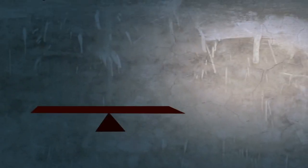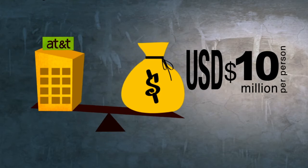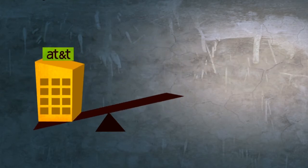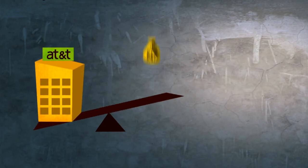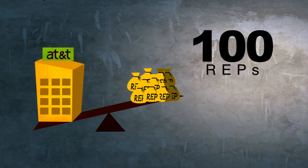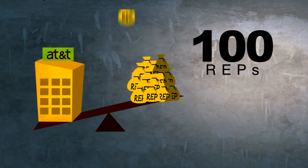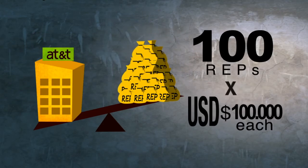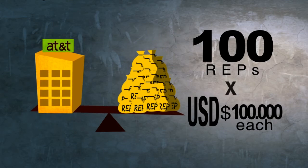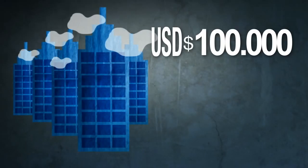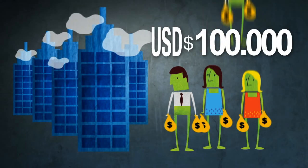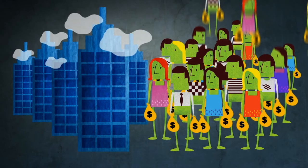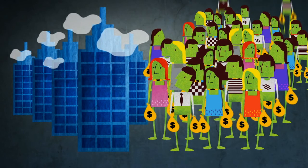But the problem is that it will cost an individual investor $10 million to buy. With REPs, the $10 million property is divided into 100 shares of $100,000 each and you can purchase as many as you want. So with $100,000 you can enjoy the benefits of an investment that would otherwise only be available to those with the capacity to invest $10 million.